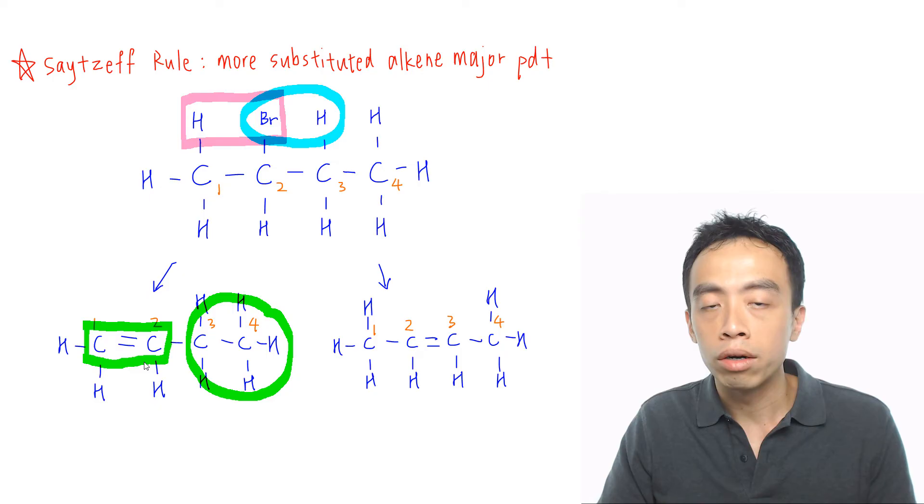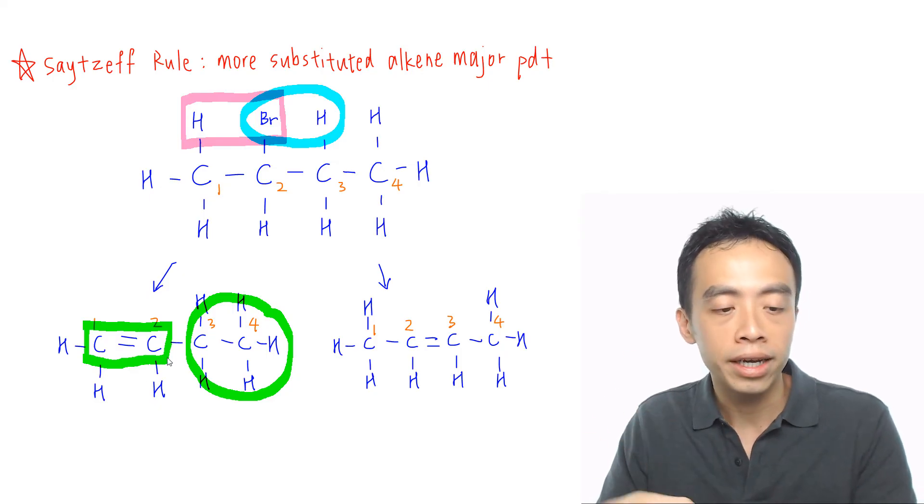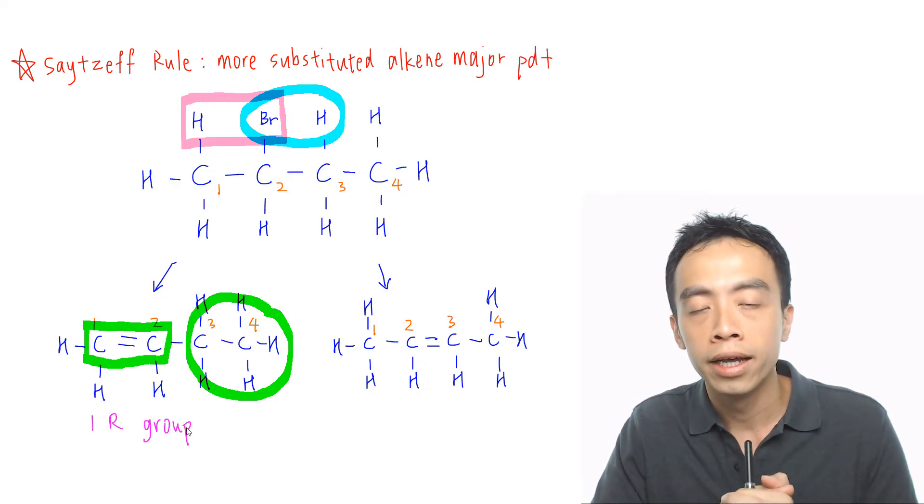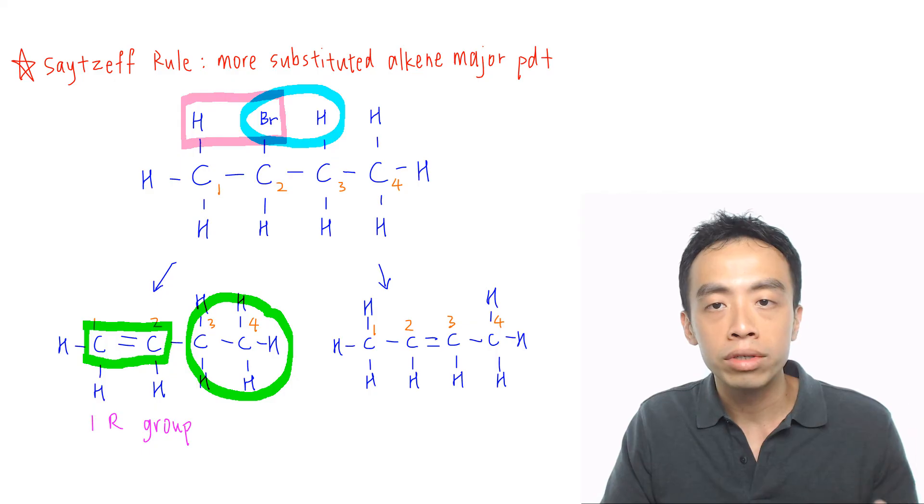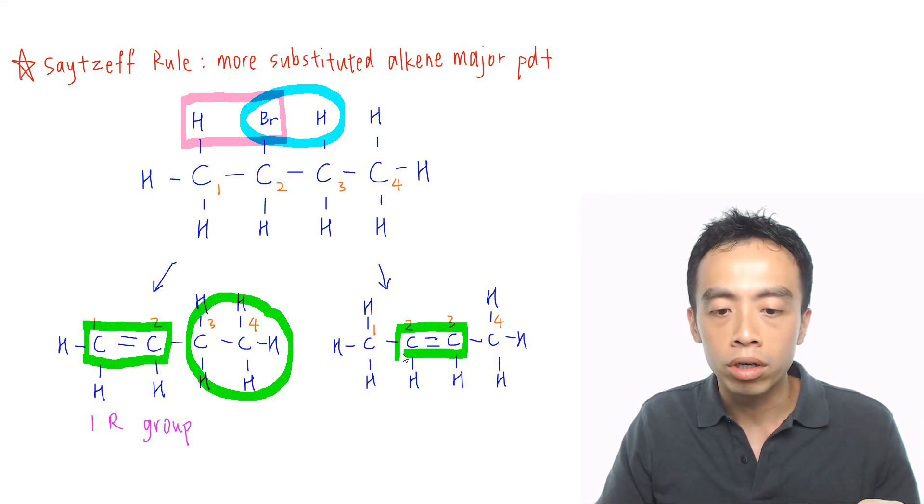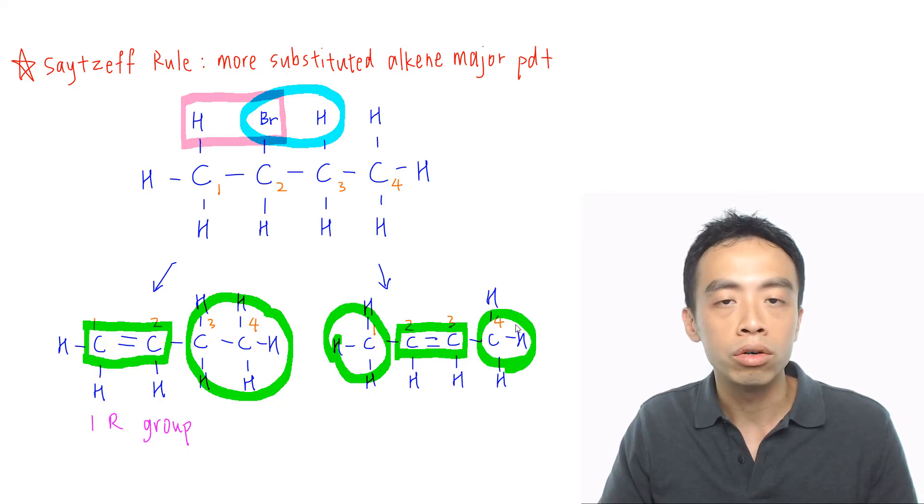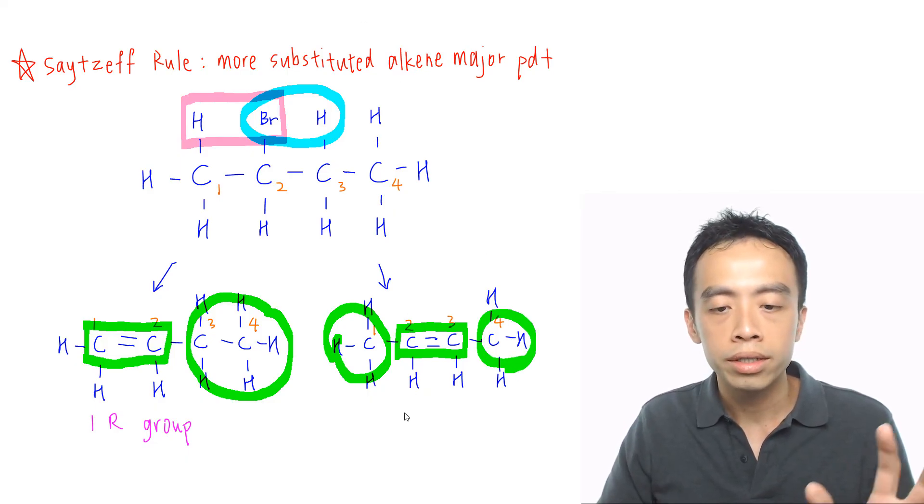So we know that this alkene on my left-hand side has one R group, so the degree of substitution is one. Then how about the other alkene? Now the other alkene on my right-hand side, if I box up my double bond and I'm going to count the number of R groups, this is one R group. Hydrogen is not an R group, and hydrogen is not an R group. This is my second R group. So this alkene on my right-hand side actually has two R groups.